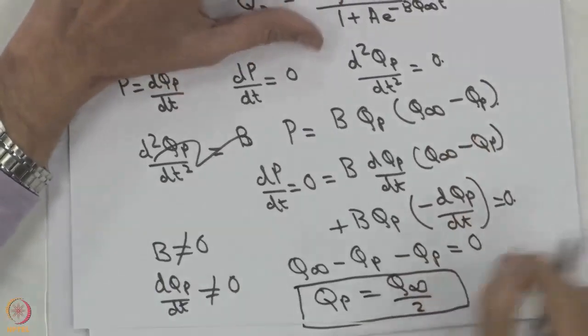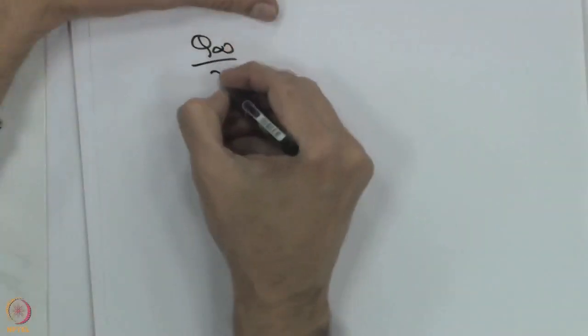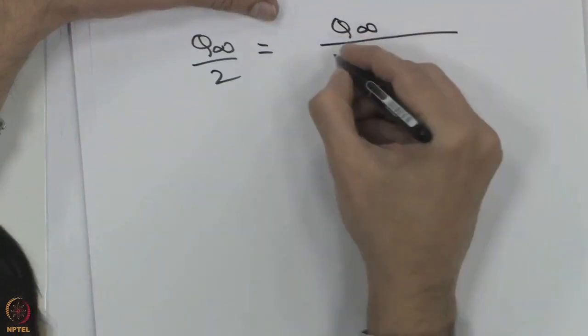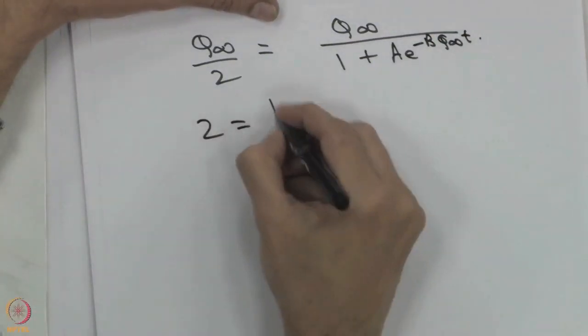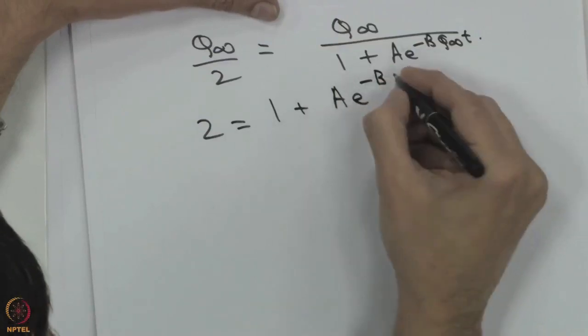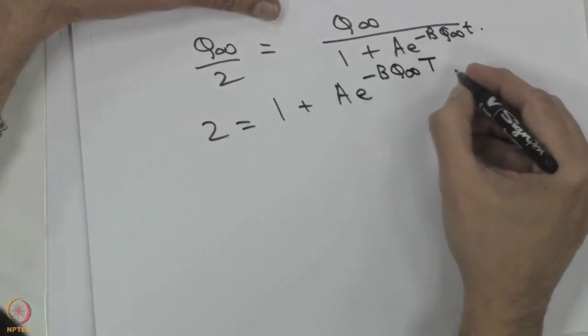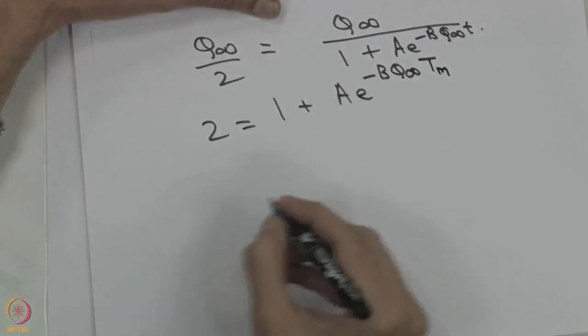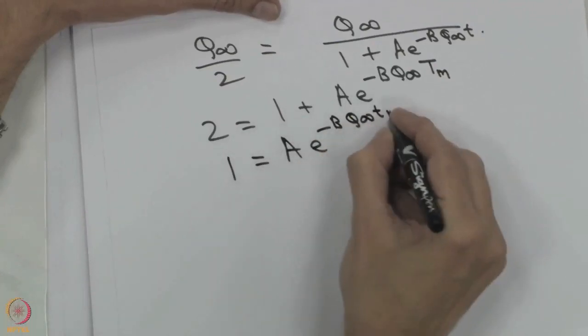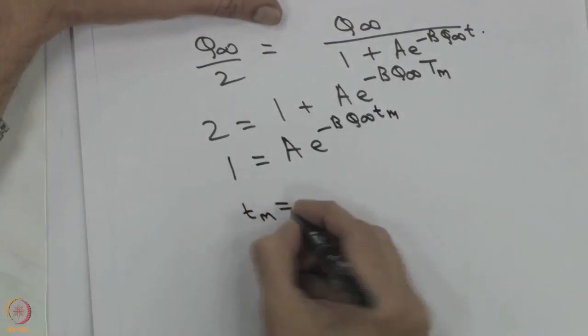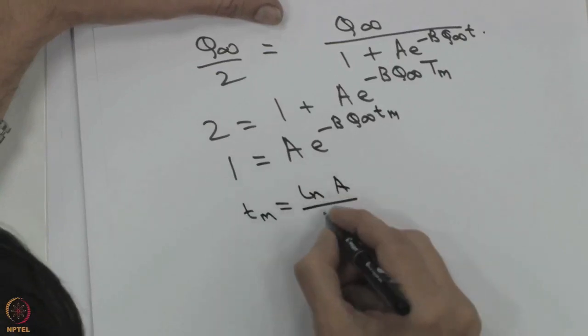Peak production occurs at the point of inflection — at the midpoint of the cumulative production curve where Qp = Q infinity/2. Substituting this into the logistic equation: Q infinity/2 = Q infinity / (1 + A × e^(−B × Q infinity × Tm)), which gives 2 = 1 + A × e^(−B × Q infinity × Tm), so 1 = A × e^(−B × Q infinity × Tm), and therefore Tm = ln A / (B × Q infinity).